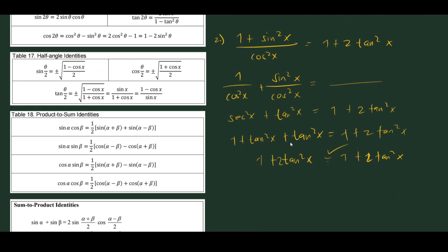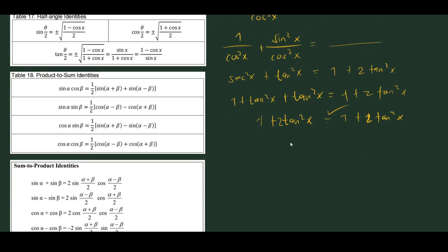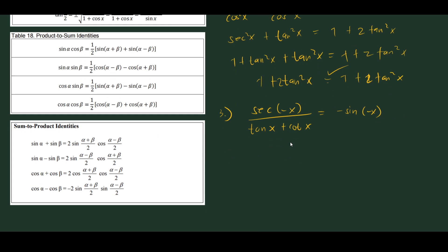Let's try another example — the third one. We have sec(-x) divided by (tan x + cot x), and we need to show this is equal to -sin(-x).